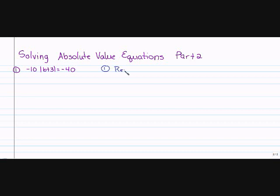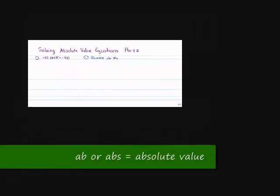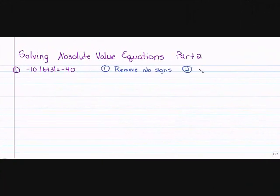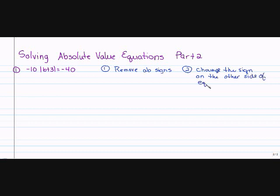The first thing I'm going to do is remove the absolute value signs. The second thing I'm going to do is change the sign on the other side of the equation. So I have to first rewrite two problems.